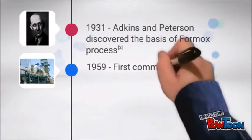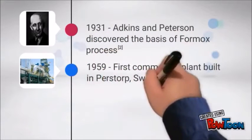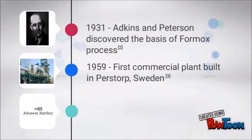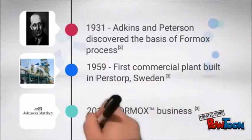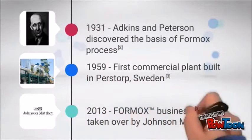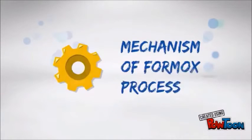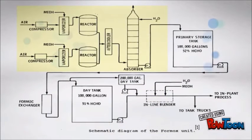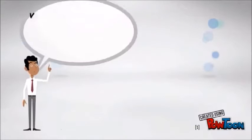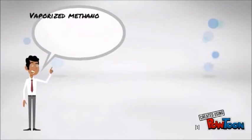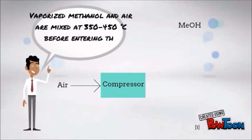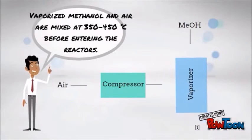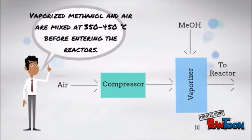The first commercial plant was built in Perstorp, Sweden in 1959, and in 2013 Johnson Matthey took over the business. There are three sections for this process. First, mixing: vaporized methanol and air are mixed at 350 to 450 degrees Celsius before entering the reactors.